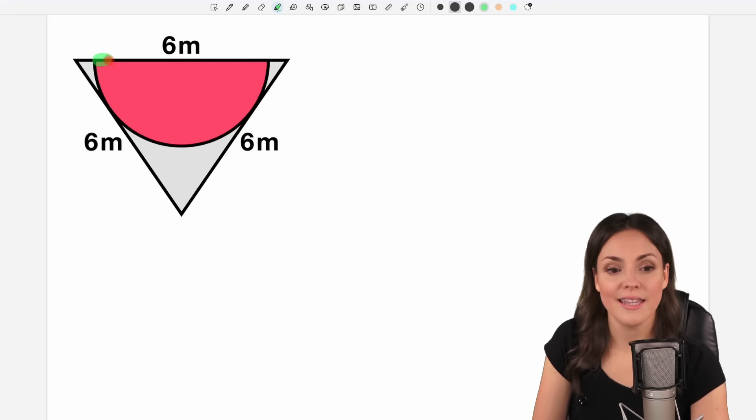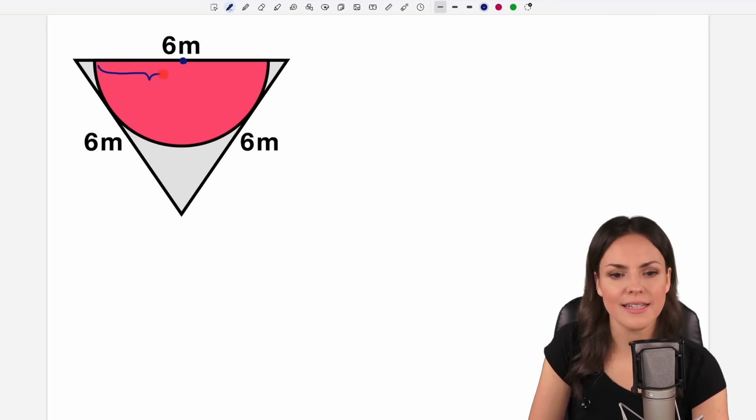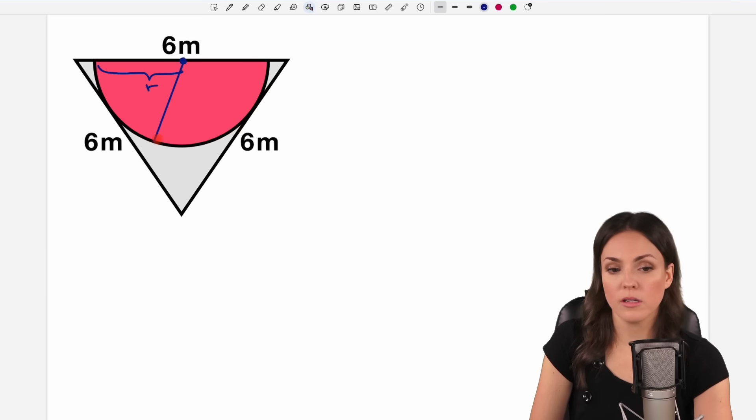They told us that this is the diameter so half of it from the center here this is our radius. And we can draw the radius everywhere here from the center to the edge of our circle if it helps us, this is the radius or from here to this touching point here. We haven't used this touching point yet but these are important points.